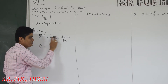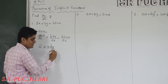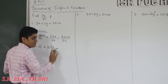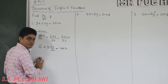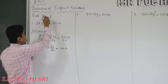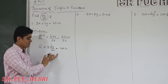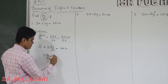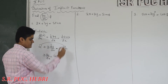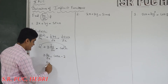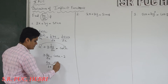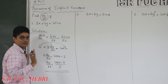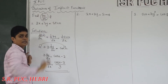The derivative of 3y: 3 comes out, and what remains is dy/dx, because y is unknown so we keep it as is. The derivative of sin x is cos x. So differentiation is done. But what is asked? Find dy/dx. Rearranging: 3(dy/dx) = cos x − 2, therefore dy/dx = (cos x − 2) / 3. This is the implicit function derivative.